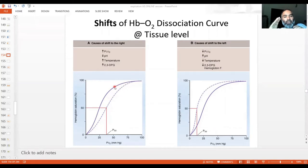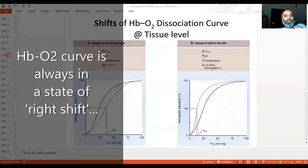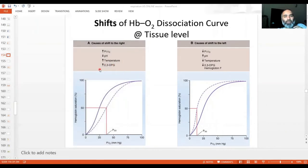Normally in the human blood, it's always pushed towards the right at all times. And this is done by 2,3-DPG or BPG.